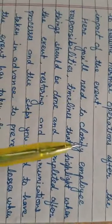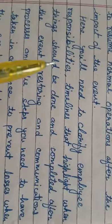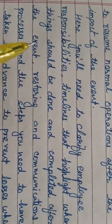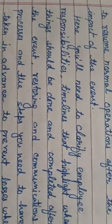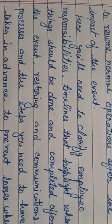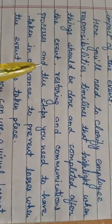Here you'll need to clarify employee responsibilities and timelines that highlight when things should be done and completed after the event. We will clarify which employee is responsible for the plan or a task, whether they complete their assigned task within their timeline, and whether the data restoring and communication process has been completed — all these things we will check according to the contingency plan.